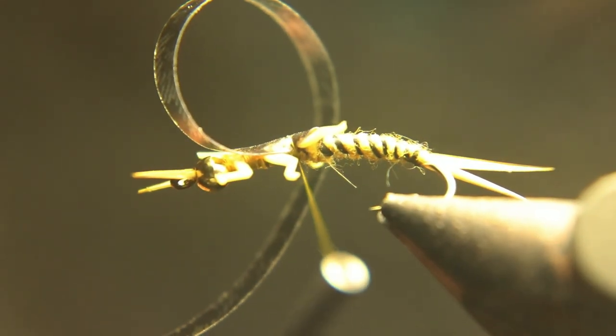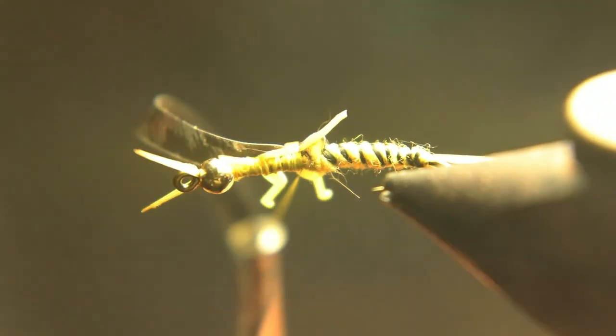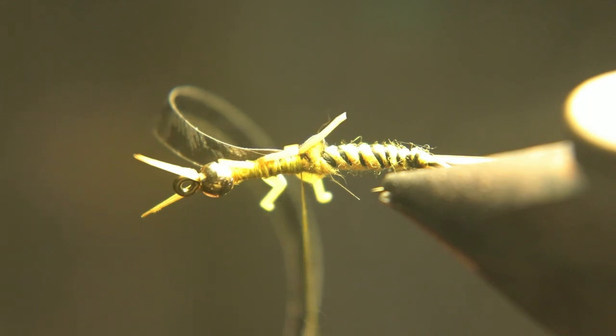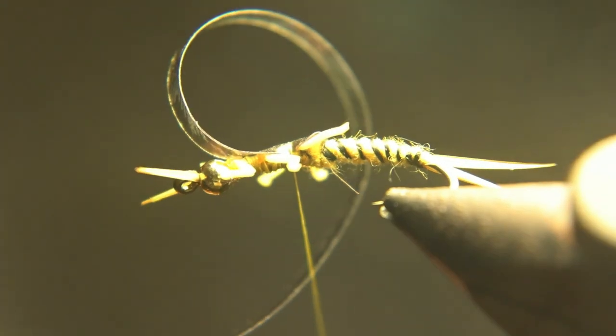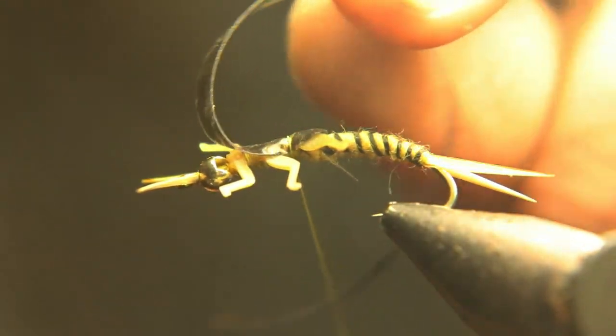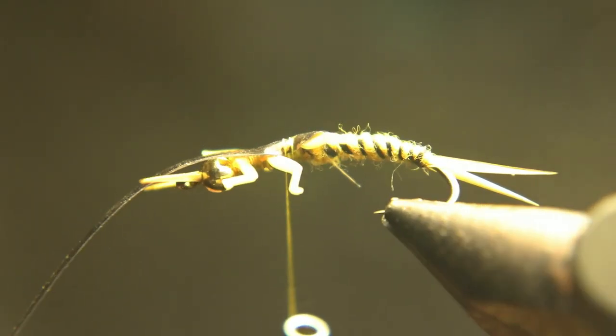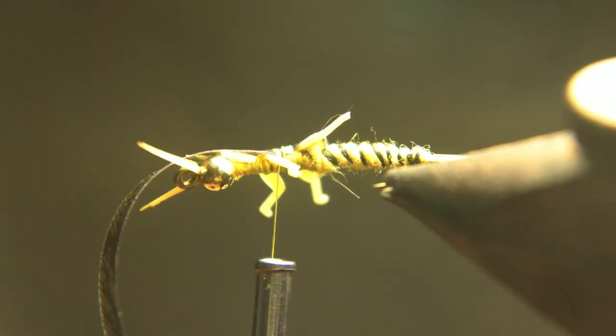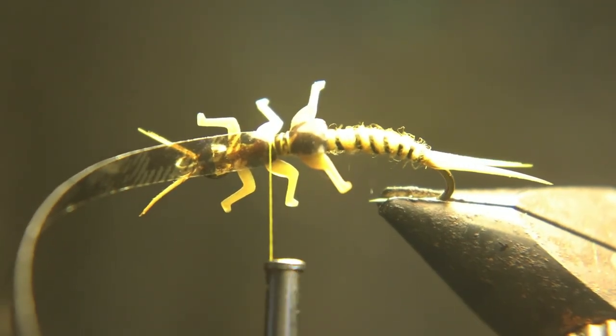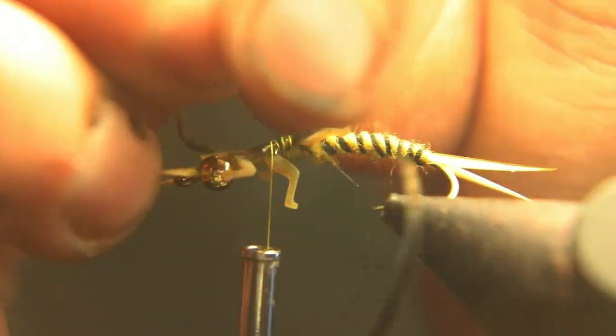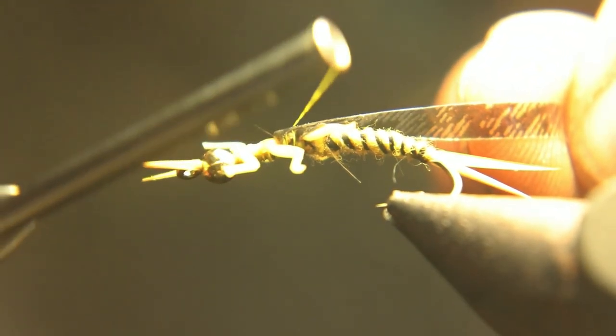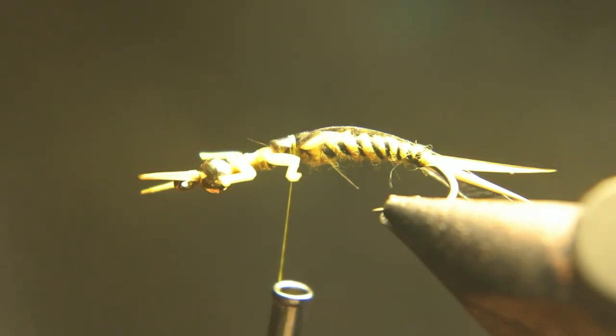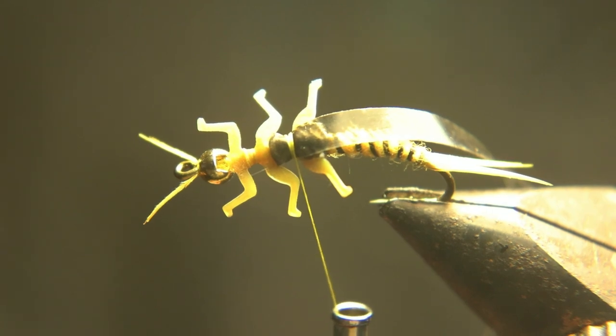I'm going to bend the nymph skin over and I like to put a crease in it. This makes a really nice smooth fold in it. Then you're going to wrap it and tie it down right behind the last set of legs. You're going to tie this all the way down up to the second set of legs, then you're going to fold it back and tie over top of that. What that's going to do is create bulk there and also make a step in the nymph skin that makes it look really nice, like the real thing.